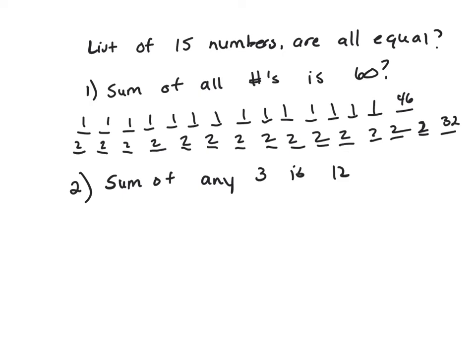We're trying to figure out: I have a list of 15 numbers, are all the numbers equal? Well, clue one does not work. I think you can see that - I made the first list with 14 ones and then the last one had to be 46. Second case I had them all twos, the last one had to be 32. But you could come up with tons of examples with a sum to 60, but obviously the numbers aren't all equal.